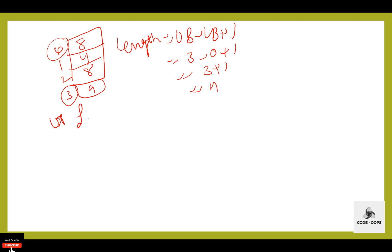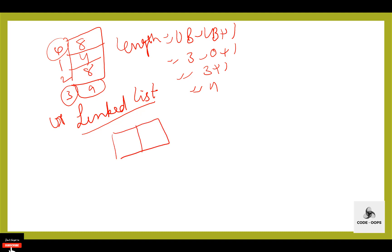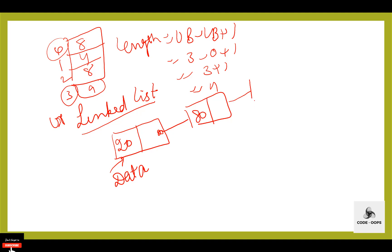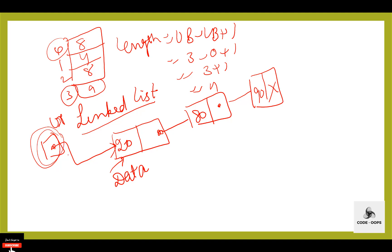The second linear data structure is linked list. Like an array, a linked list is a linear data structure. Unlike an array, linked list elements are not stored at contiguous locations — they are linked using pointers. In a linked list, every node is divided into two parts: the first part holds the data and the second part holds the address of the next node to be processed. There is one special pointer that holds the address of the first node, and null indicates the end of the list.